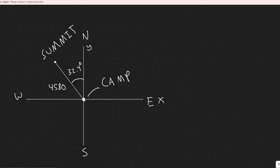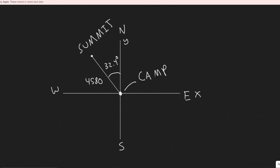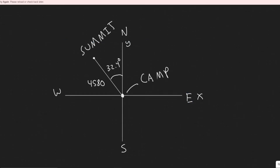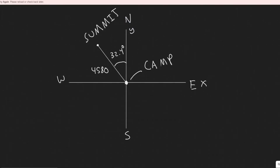The first thing you should always do is draw what's going on. Imagine we have this camp sitting at the middle of the axis here, with north, east, south, and west. This is a 3D scenario. Imagine we're looking at it from the top down. We label the x-axis to the east, the y-axis to the north, and the z-axis going straight upward.